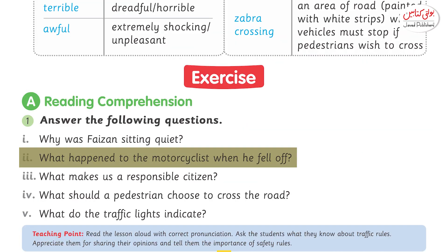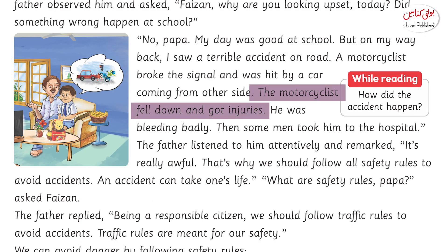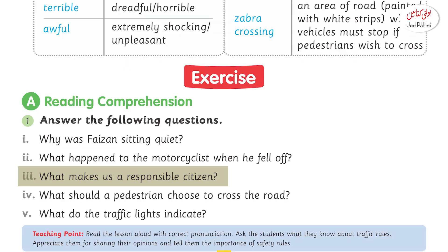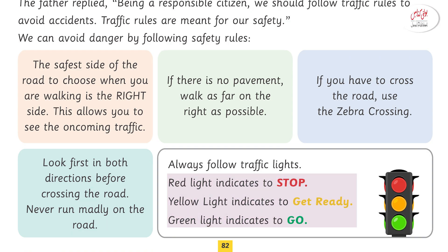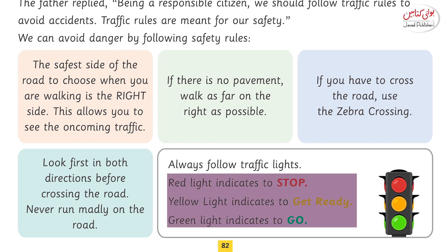Question number two: what happened to the motorcyclist when he fell off? The answer is the motorcyclist fell off and got injuries. Question number three: what makes us a responsible citizen? The answer is following the rules of traffic and the safety rules make us a responsible citizen.